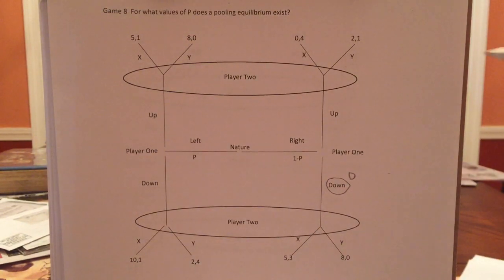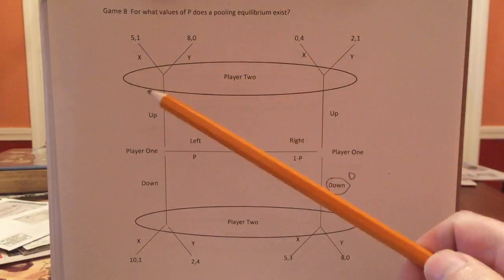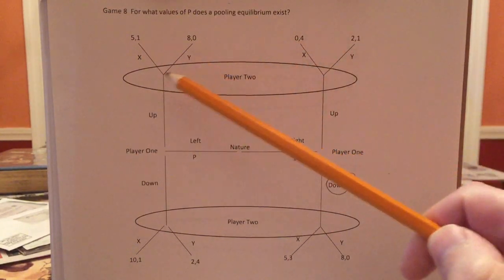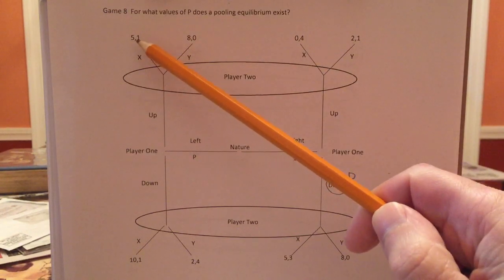Now let's go on to player two. Player two, you are told up has been played. So you are somewhere here. Let's see. If you knew you were on the left, you would want X.